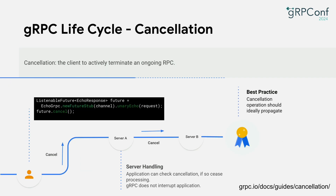While a deadline triggers cancellation automatically, a user can also actively terminate an outgoing RPC. This is done by calling cancel on the client core object — or on the context in some languages. Like in this code snippet, it cancels on the future object. The cancellation signal is propagated to the server. gRPC does not have a mechanism to interrupt the server application directly, but that is not a problem — the server can check the cancellation status on the call. For long-lived RPCs, the server handler should periodically check the call status to see whether it has been canceled, and cease and propagate the operation downstream accordingly.